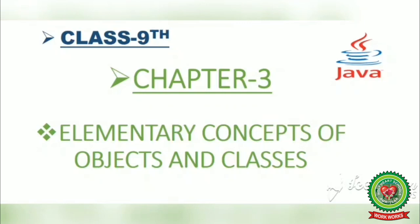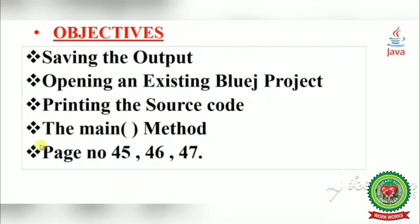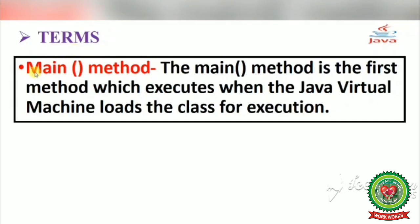Today we are going to discuss class 9 chapter 3 elementary concepts of objects and classes. In the last video I discussed where the class file is saved, compiling the Java code, where the compiled code is saved, creating an object after creating a class, and executing the memory of the class. Today we will discuss saving the output, opening an existing BlueJ project, printing the source code, and how to execute the Java program through the main method. These objectives will be covered through pages 45, 46, and 47.